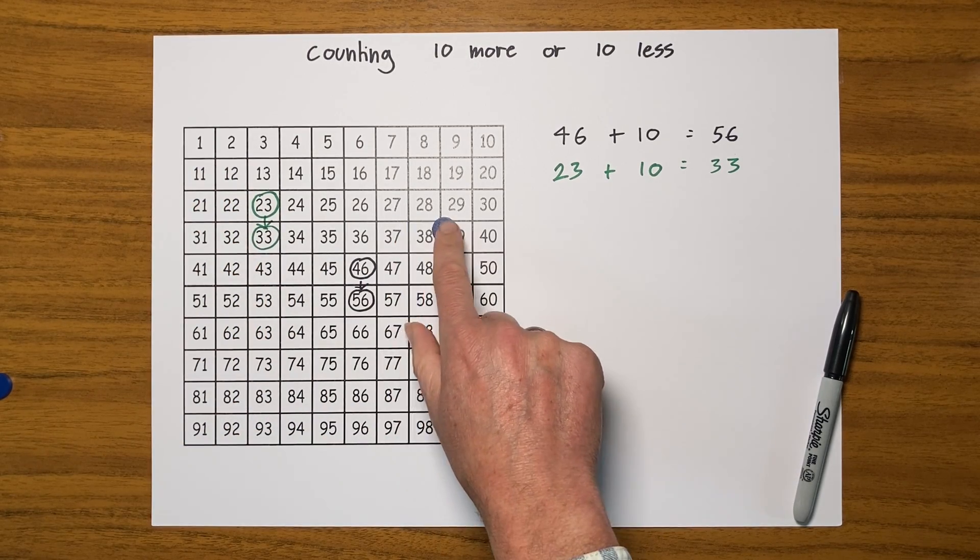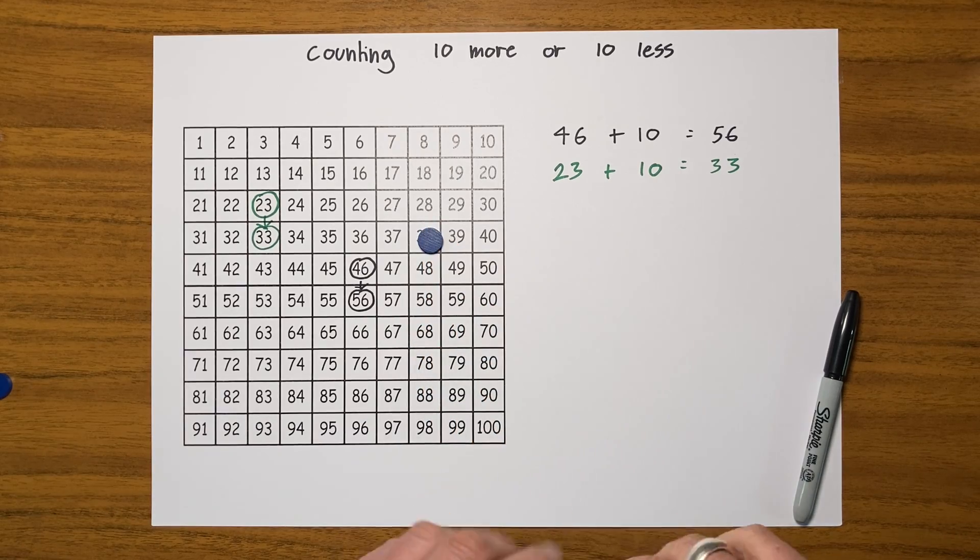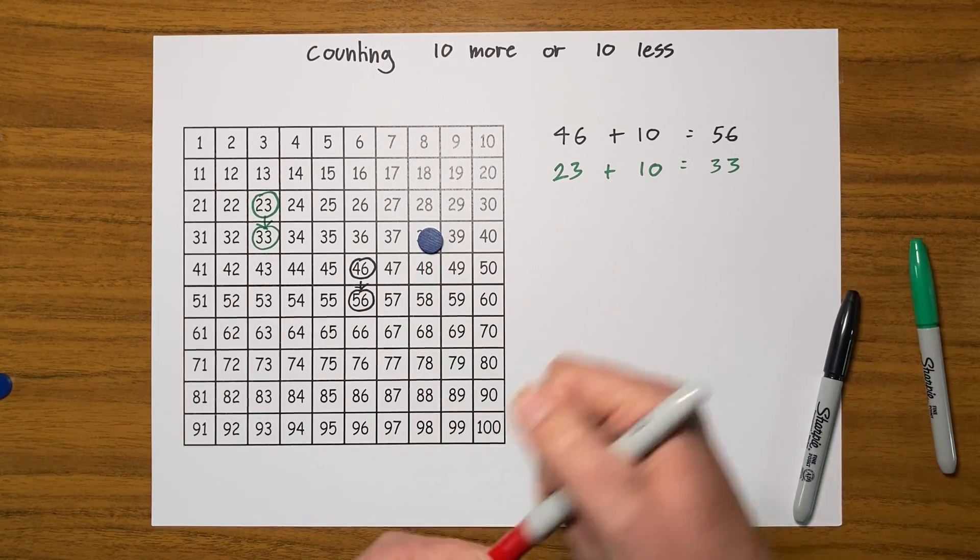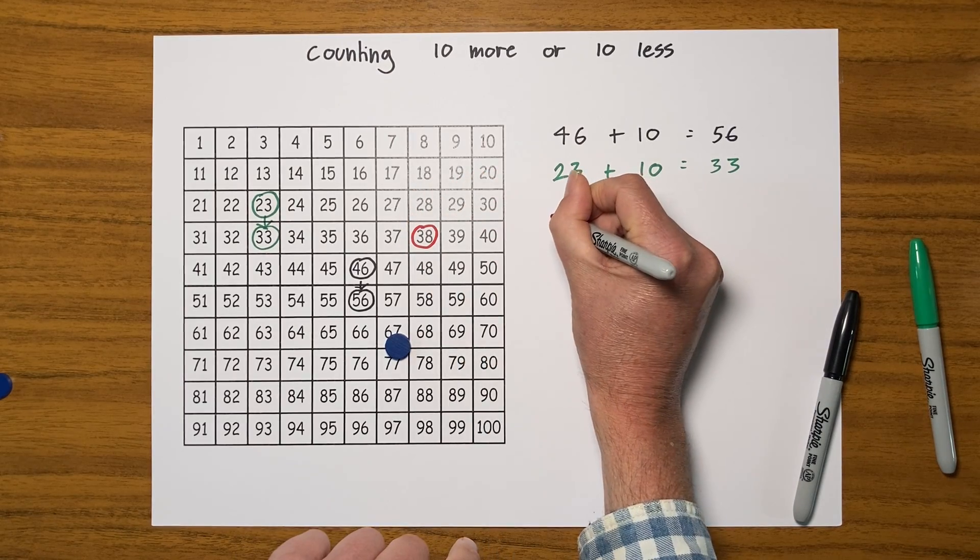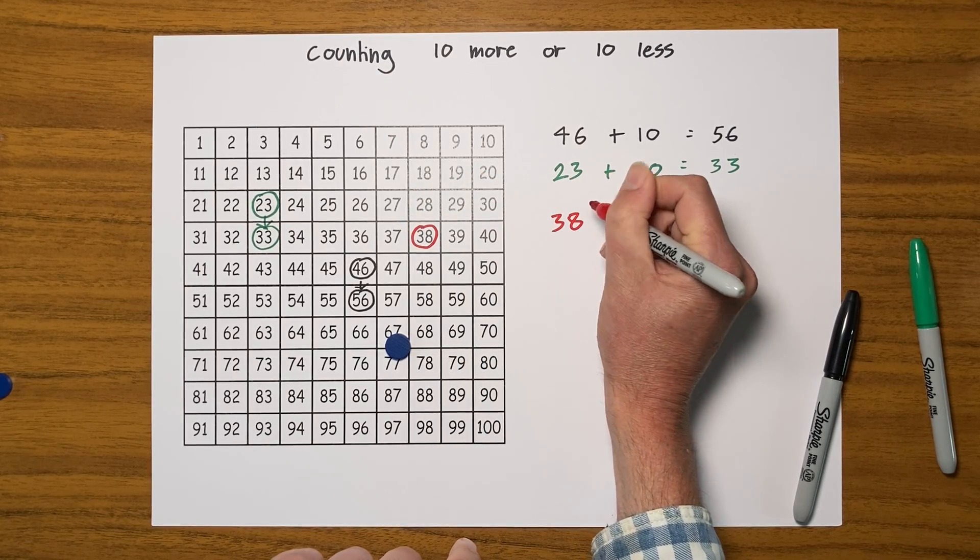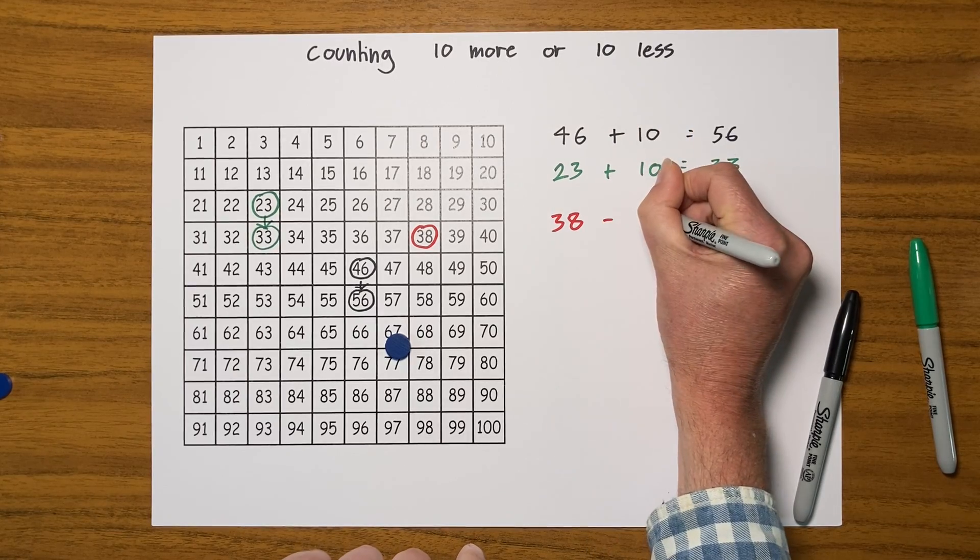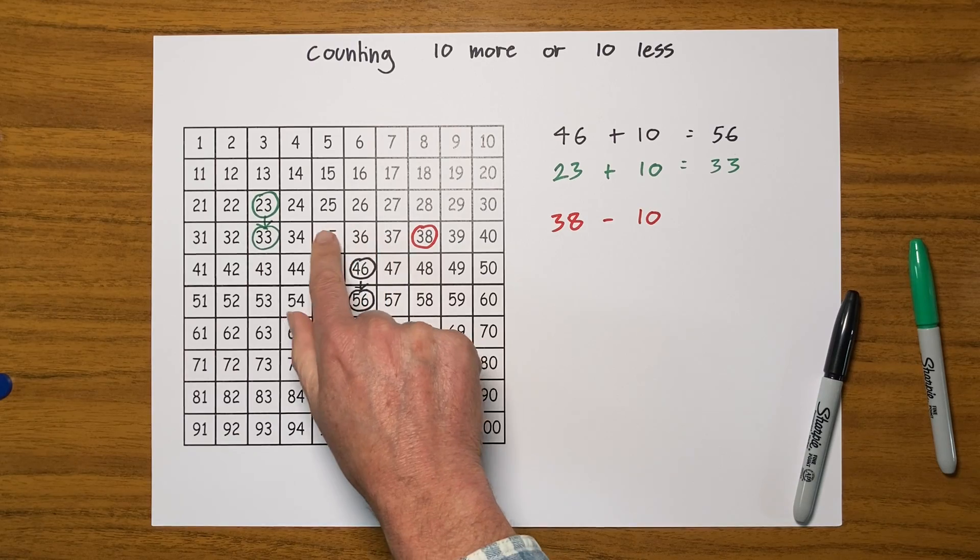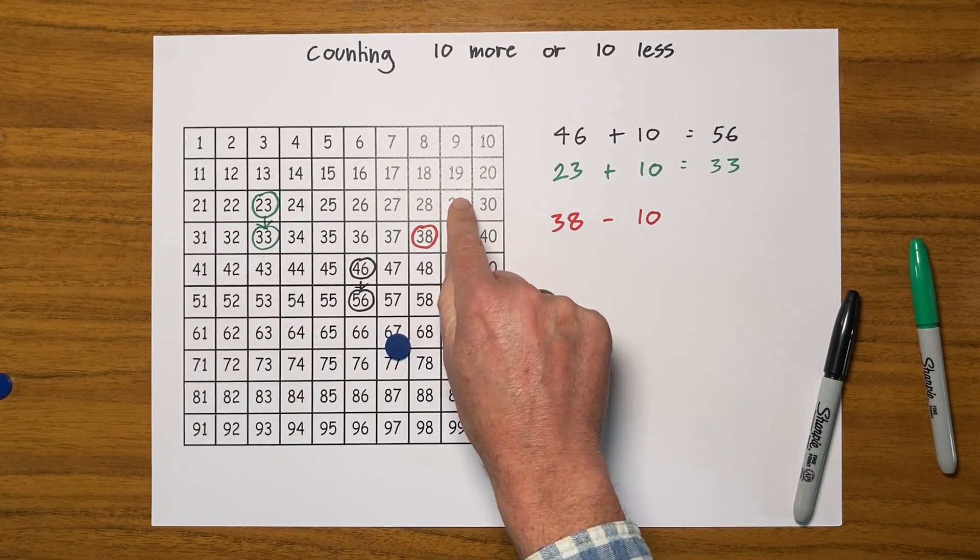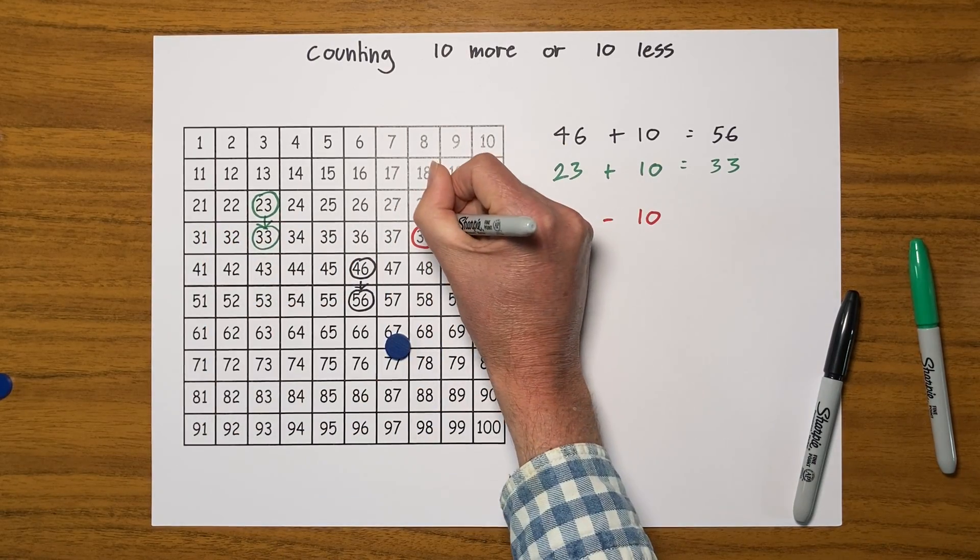Oh, let's move it here to 38. Let's move it here to 38, get a different colour again. So I've got 38 and this time I'm going to go 10 less, I'm going to take away 10. So I can count backwards 1, 2, 3, 4, 5, 6, 7, 8, 9, 10.